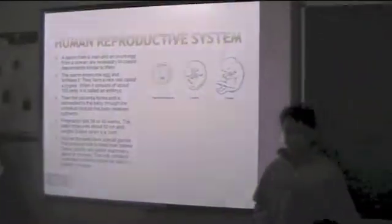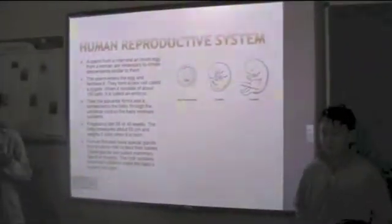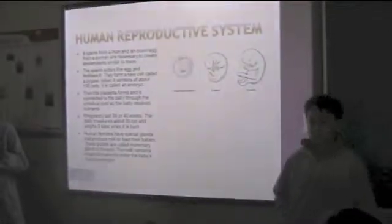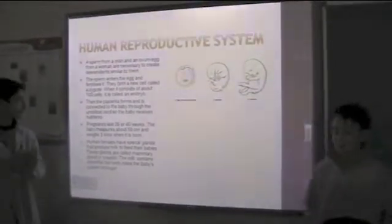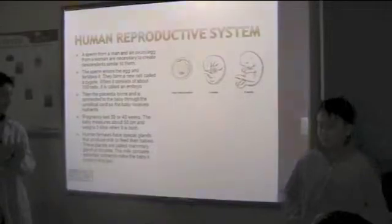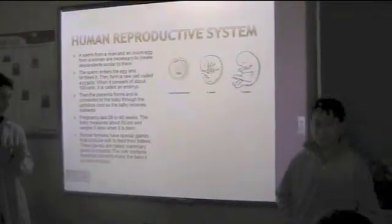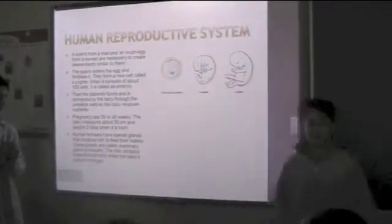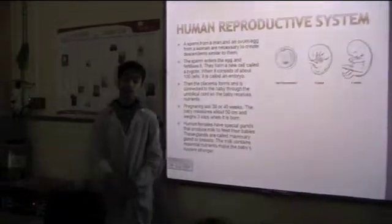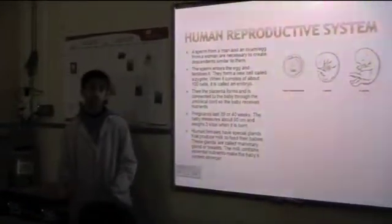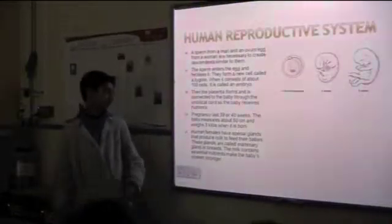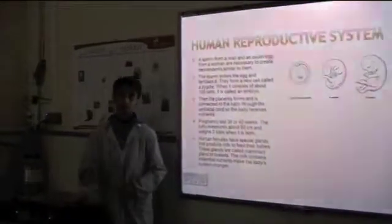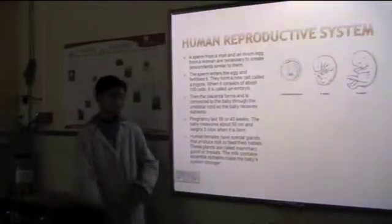The baby is created from the sperm of men. The baby is in the arms of women, and the organ of adults creates a new life. After pregnancy, when the baby is born, the baby weighs approximately fifty centimeters long.